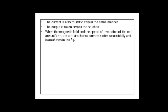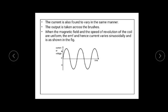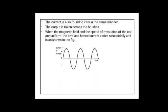The current is also found to vary in the same manner. The output is taken across the brushes. When the magnetic field and the speed of revolution of the coil are uniform, the EMF and hence current varies sinusoidally, as shown in the figure. First it is zero, then it reaches maximum, then it comes to minimum, then it changes direction and again increases to maximum, then again minimum, and again changes direction like this. So current varies sinusoidally — this is a sine wave. In an AC generator, the waveform of the output current is AC.